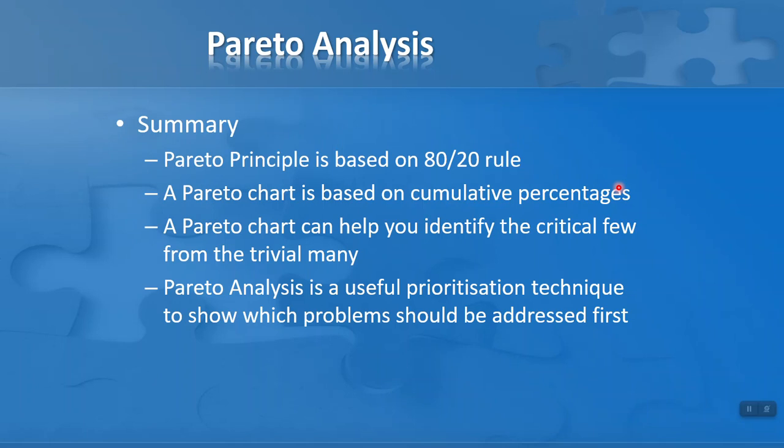In summary, the Pareto principle is based on the 80-20 rule. We can use a Pareto chart to give us our cumulative percentages, and this chart can help us identify the critical few from the trivial many. This makes it a very useful prioritisation technique to show which problems should be tackled or addressed first. I hope you found this lesson useful. Thank you for your attention.